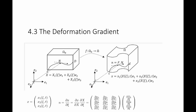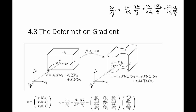Now notice the following: partial x1 by partial Xc can be expanded using the chain rule. We can write partial x1 as equal to partial x1 by partial X1 multiplied by partial X1 by partial Xc, plus partial x1 by partial X2 multiplied by partial X2 by partial Xc, plus partial x1 by partial X3 multiplied by partial X3 by partial Xc. We can do the same for partial x2 by partial Xc.